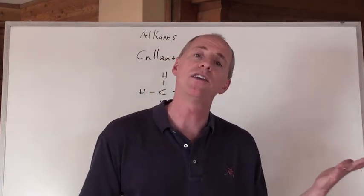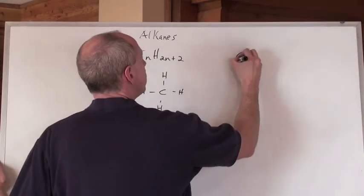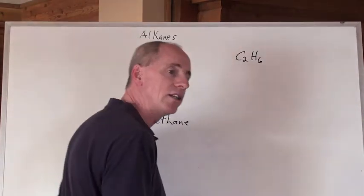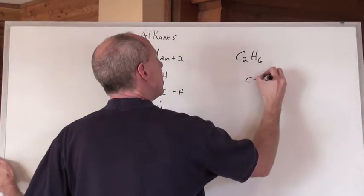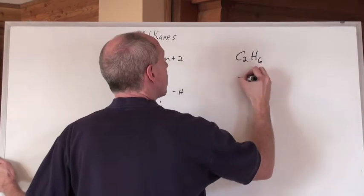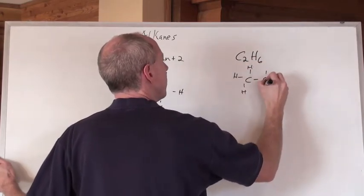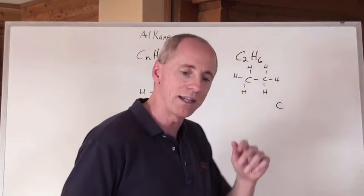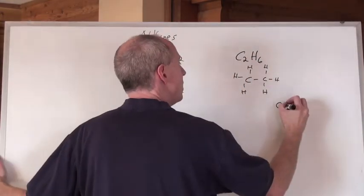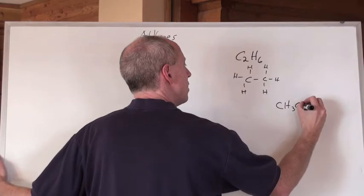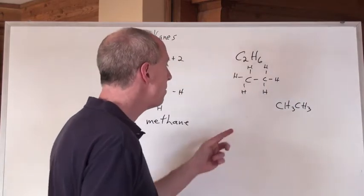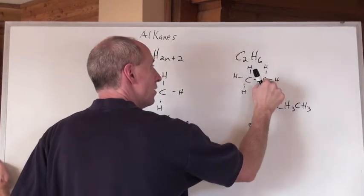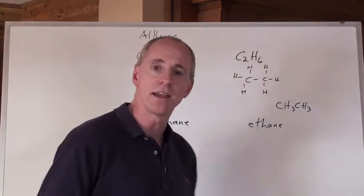What's the next one in this chemical family? It would be C2H how many? Twice as many plus two. Four plus two is six. C2H6. That formula right there has a condensed structure that's going to look like this, or it's going to look like CH3CH3. The name of that is going to be eth for two carbons, and because there's a single bond to those carbons, it's ane, and that's called ethane.